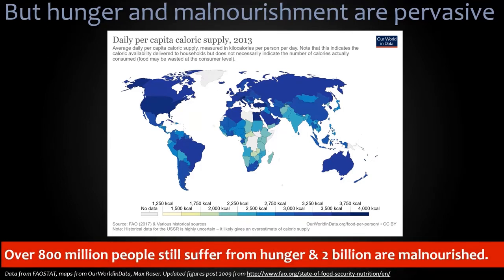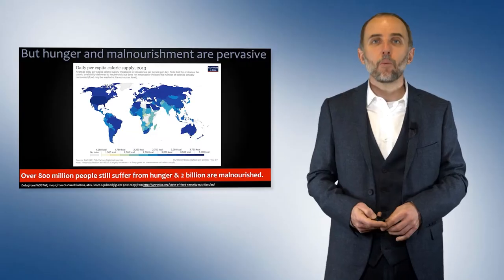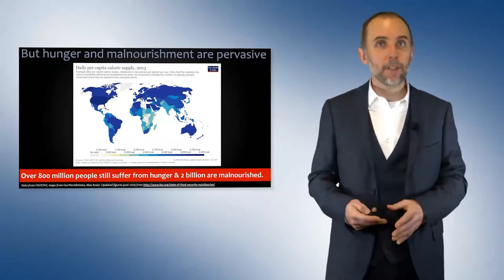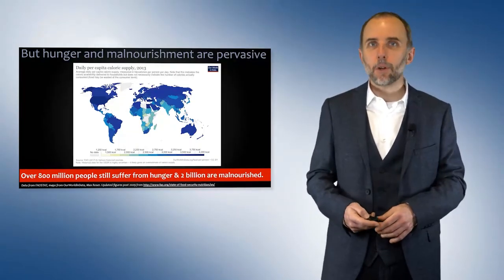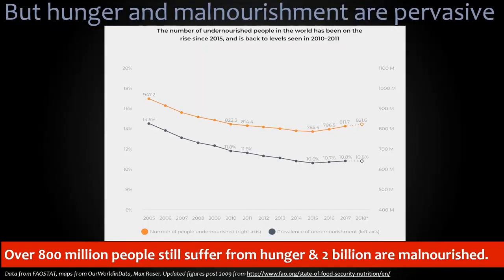Over 800 million people still suffer from hunger, and about 2 billion are malnourished. And whilst we've been making big improvements as those two maps have shown, this graph shows some more concerning recent trends. We've been doing a very good job reducing malnutrition over the last decade, but the last 3–4 years have started to see an uptick, where now we're seeing more people who are malnourished.